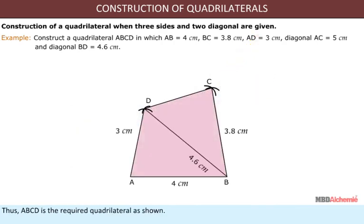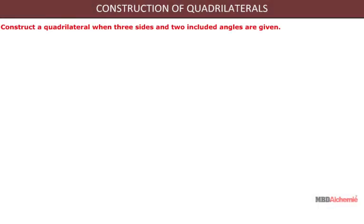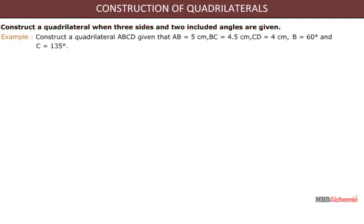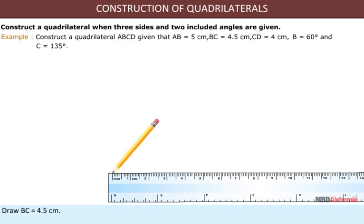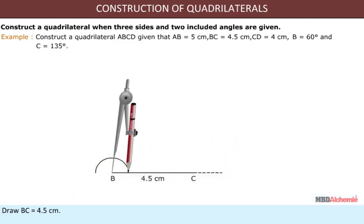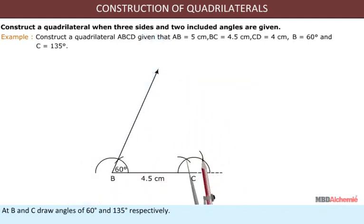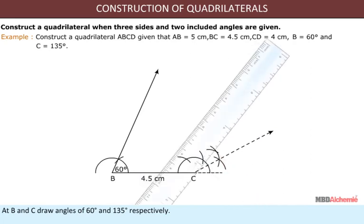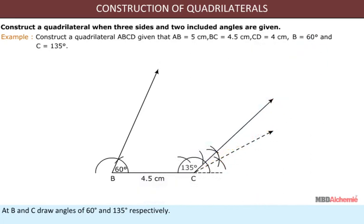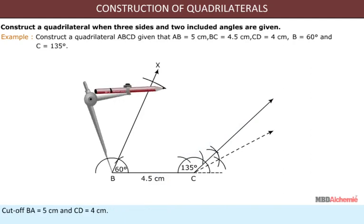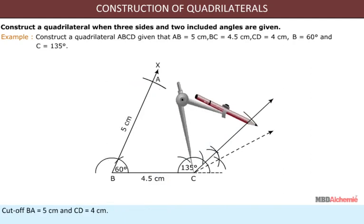Here we construct a quadrilateral whose three sides and two included angles are given. Steps of construction: Draw BC = 4.5 cm. At B and C, draw angles of 60 degrees and 135 degrees respectively. Cut off BA = 5 cm and CD = 4 cm, then join A to D.